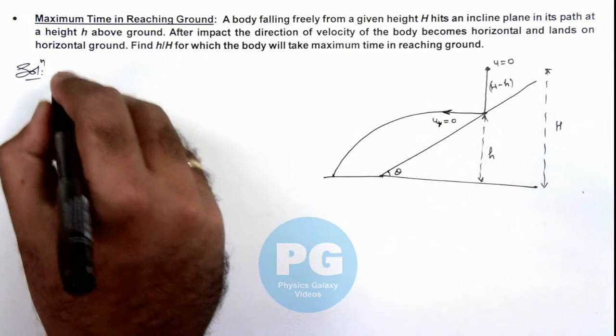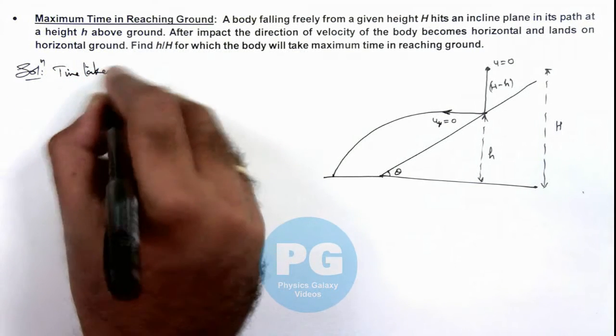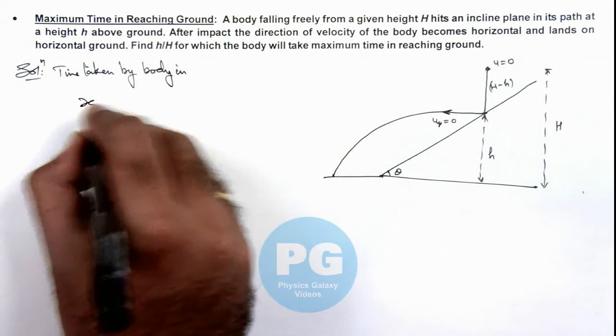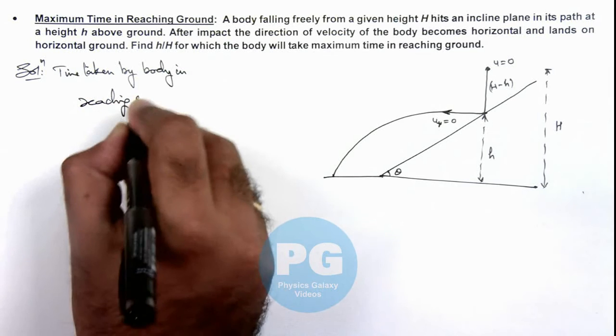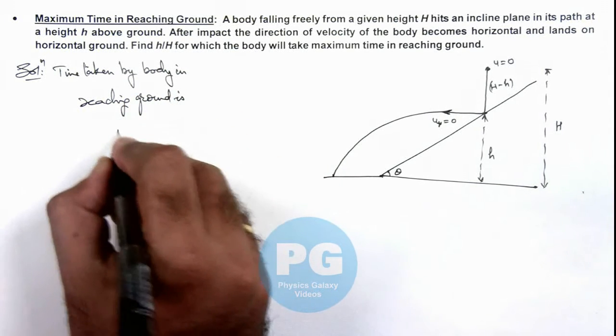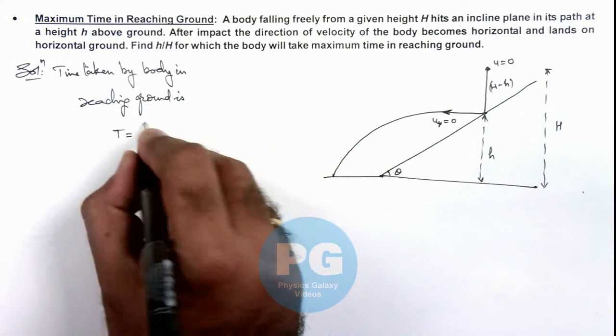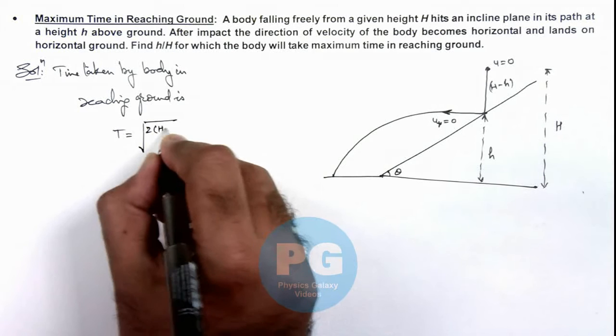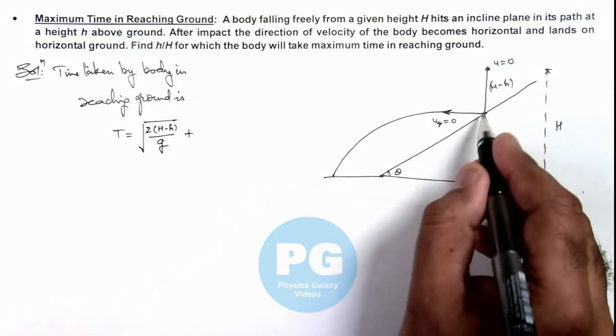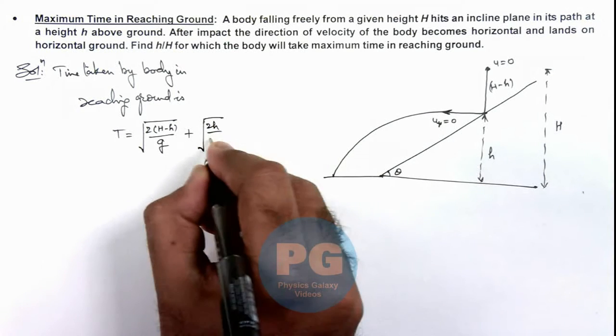Here we can write directly the time taken by this body in reaching ground. First it travels a distance H minus h, so time will be root of twice of H minus h by g, plus the time taken to fall by a height h, which is root of twice of small h by g.